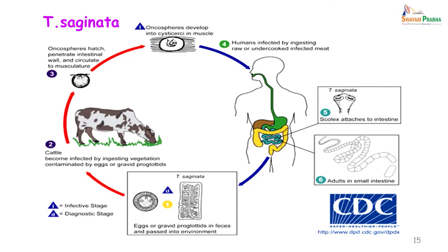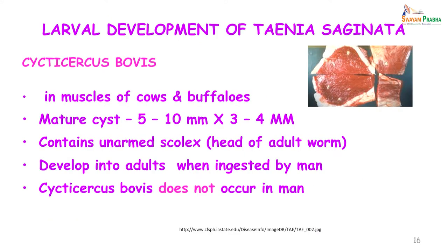When fecal material mixes with grass and cattle are grazing in that area, they will ingest either the proglottids or the eggs, which then release the oncospheres. These oncospheres penetrate the intestinal wall, circulate, and reach the musculature of the animal where they can persist for a long time. Cysticercus bovis is what you see in the muscle of cattle — a mature cyst about 5 to 10 millimeters by 3 to 4 millimeters, containing an unarmed scolex. It develops into an adult when ingested by man. Cysticercus bovis does not occur in man.